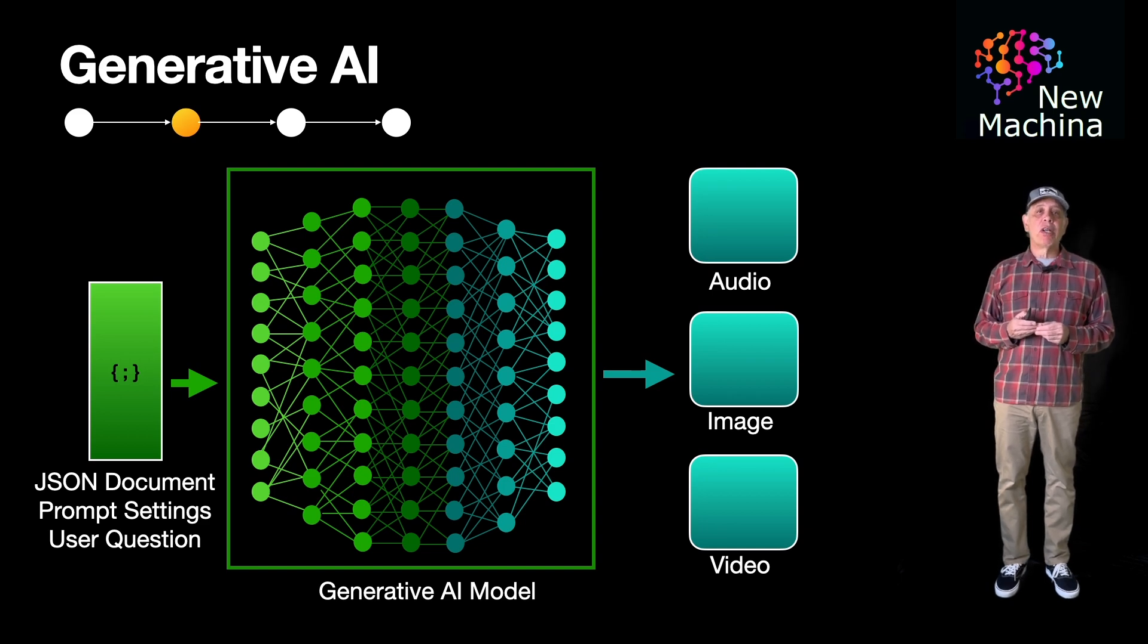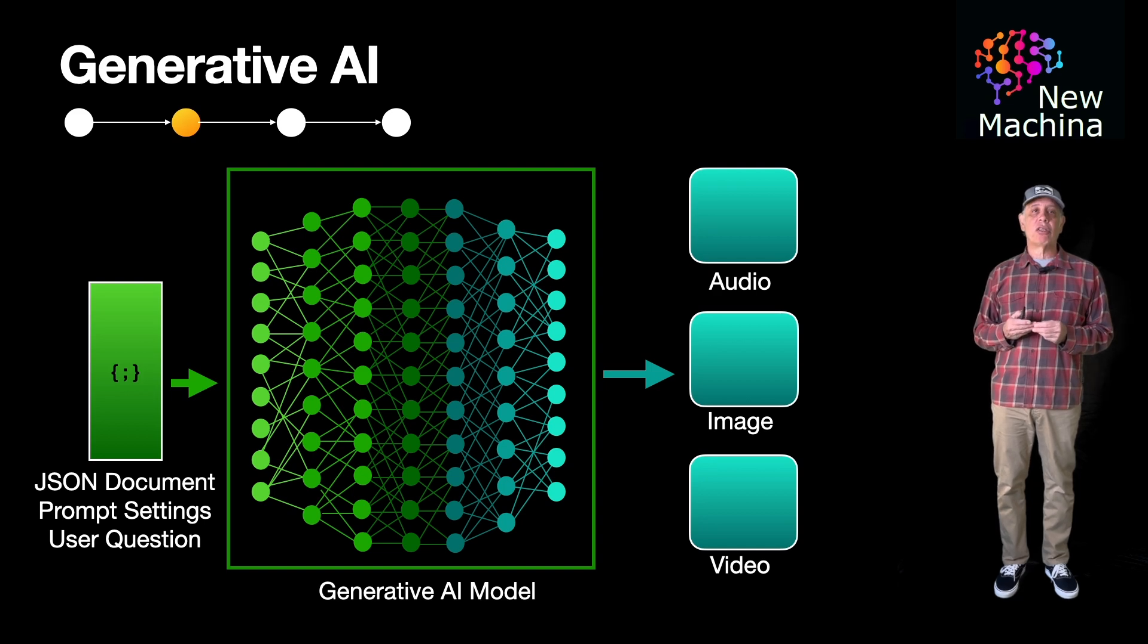Gen AI focuses on generating novel outputs such as images, text, or music based on learned patterns and structures in the training data. Gen AI is often used in tasks such as image generation, text generation, and creative applications.